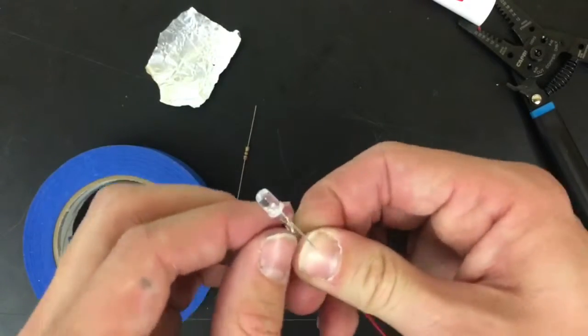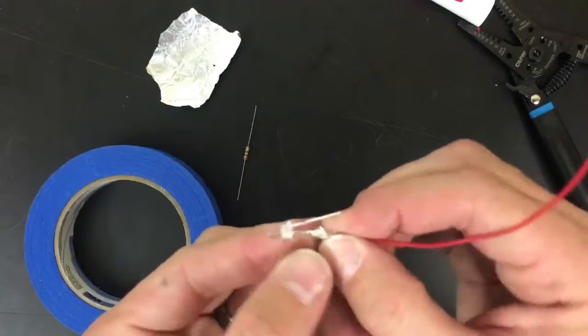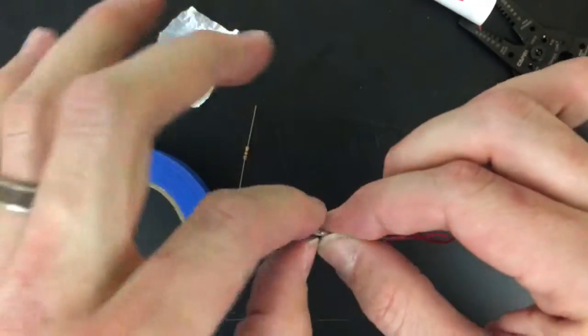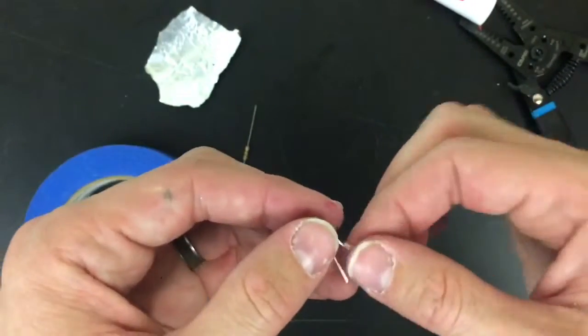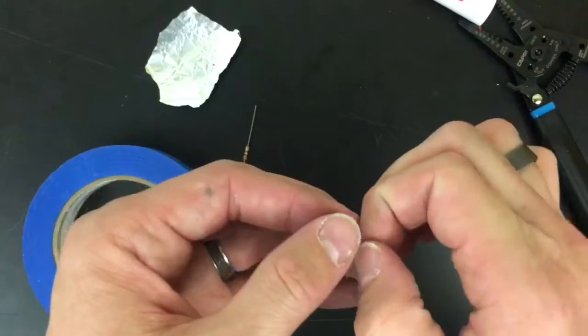And I'm going to wrap it around this joint, like so. It doesn't have to be super neat, I can just kind of crumple it on there. But the idea is, even if this thing flexes around back and forth, I still have a connection through the foil.